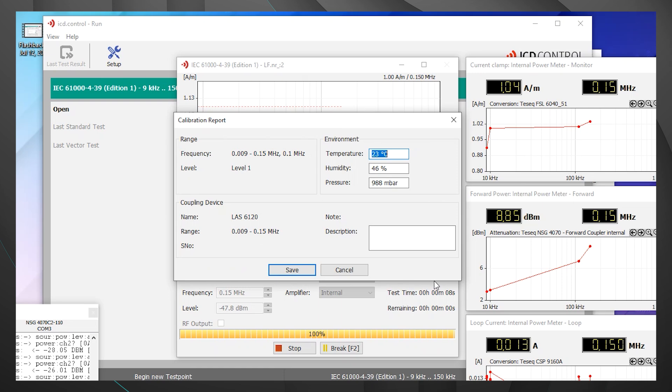It looks like the calibration was successful. That should complete the video today on IEC 61000-4-39 testing with the TESEC NSG 4070 C2-110. We began the video by walking through a little bit about the test system as well as the antenna kits. Then we took a look at the software and we ran a quick calibration. We hope this video has been useful and please keep us in mind if you ever need to rent any test equipment for IEC 61000-4-39. We'll see you next time.